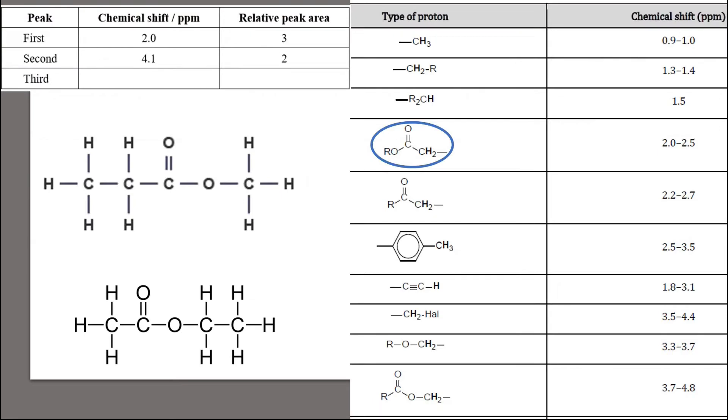Let's now compare the two possible isomers that we have left against the chemical shift data. Both of these molecules have three hydrogen environments. The peak at 2.0 ppm belongs to the CH bonds next to a carbonyl group. The isomer on the top should give a relative peak area of 2 since there are two hydrogen atoms on that carbon.